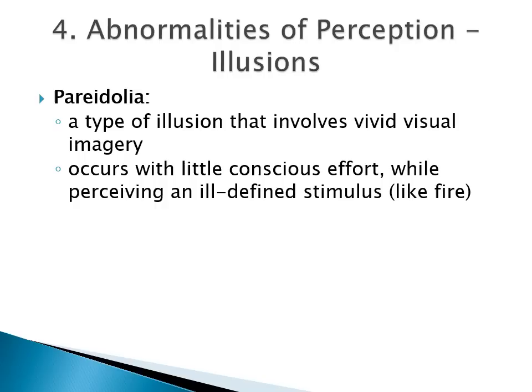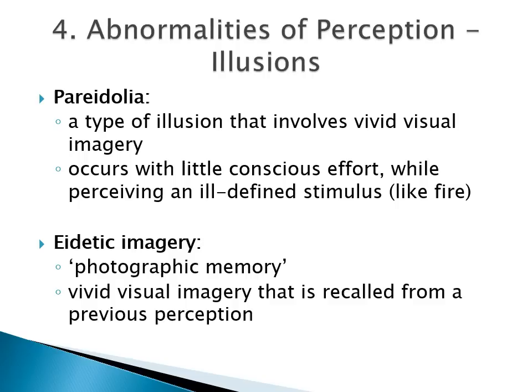We will look at some types of illusion. In pareidolia, there is vivid visual imagery that occurs with little conscious effort while perceiving an ill-defined stimulus like a fire. Eidetic imagery is also called photographic memory, where from a previous perception the person has vivid visual imagery. These two illusions are not necessarily pathological and are not usually seen in clinical practice.